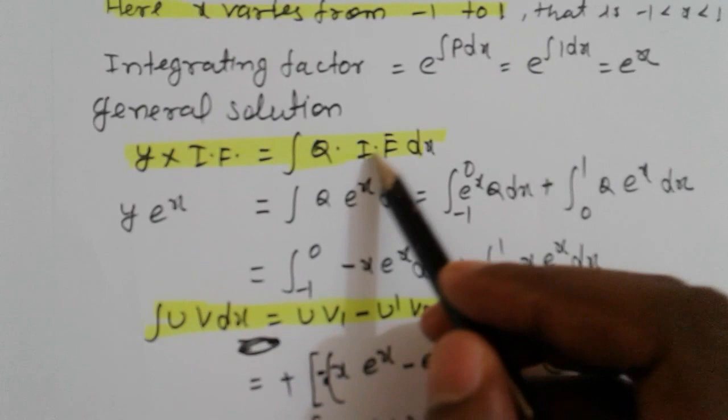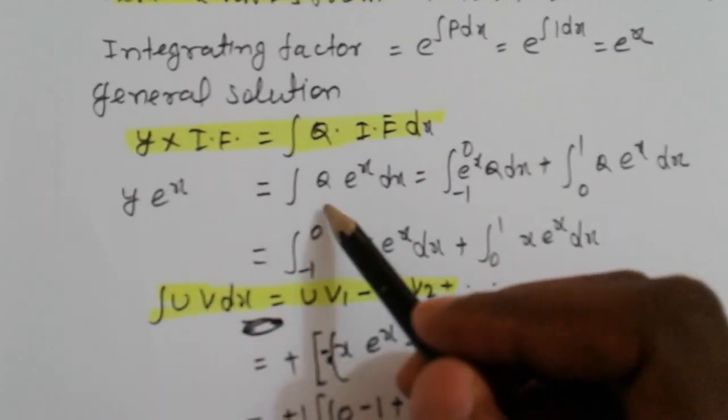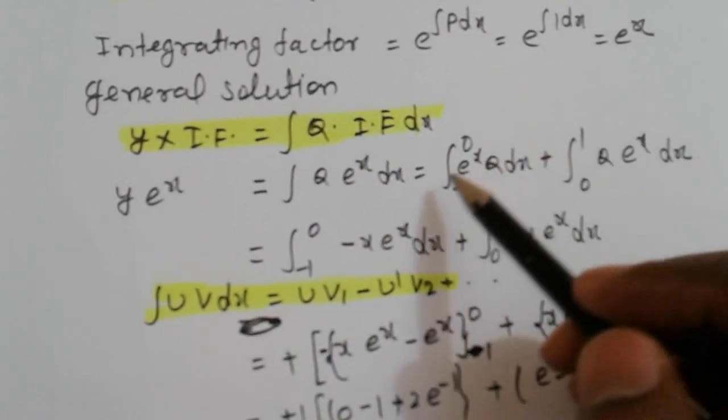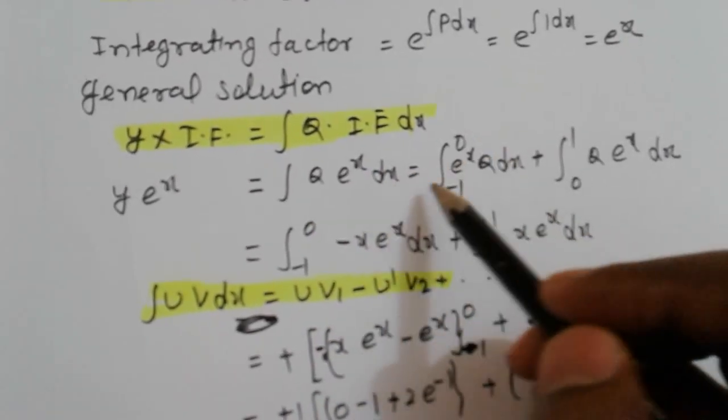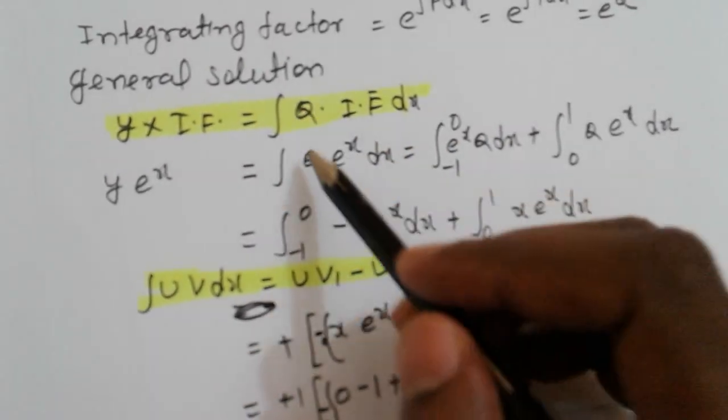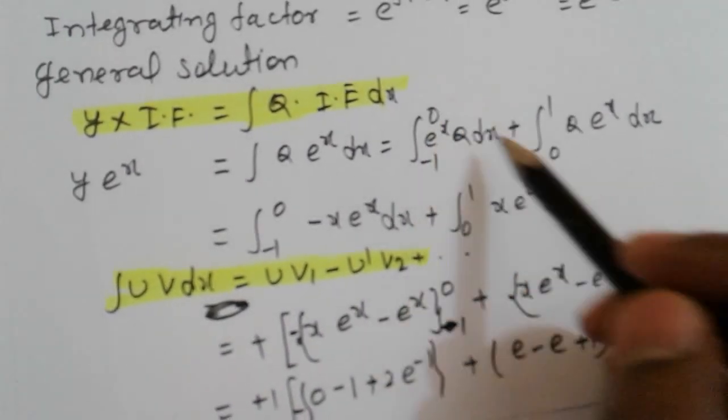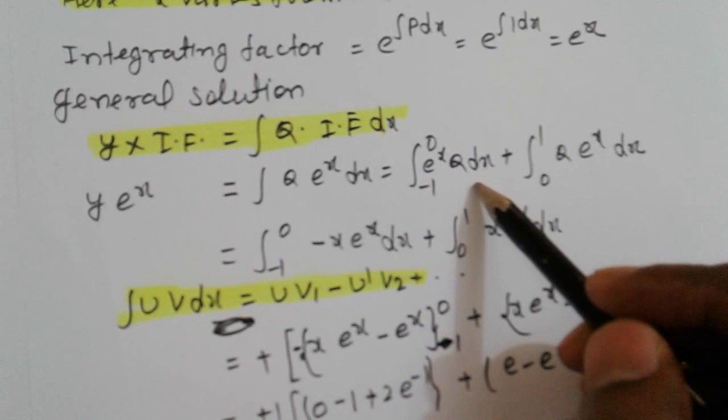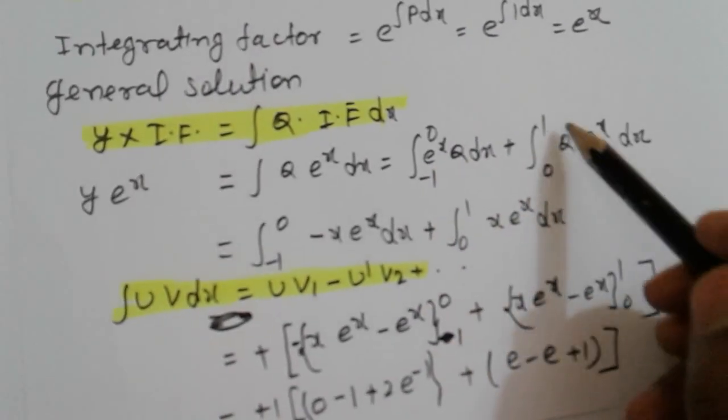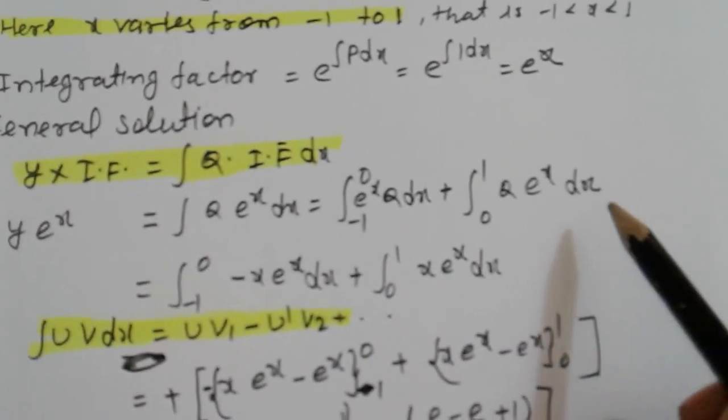Y e raised to x equals integral Q e raised to x dx. Now X lies between minus 1 to 1, so first break limit in 2 parts: minus 1 to 0 and 0 to 1. Minus 1 to 0, Q e raised to x dx, plus 0 to 1, Q e raised to x dx.